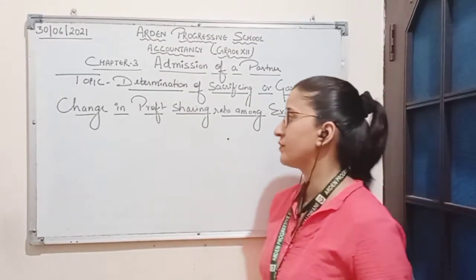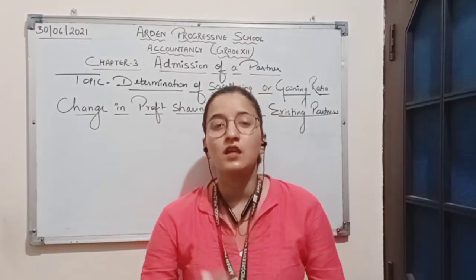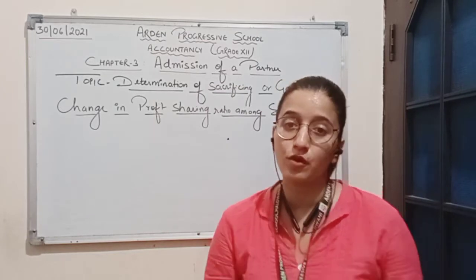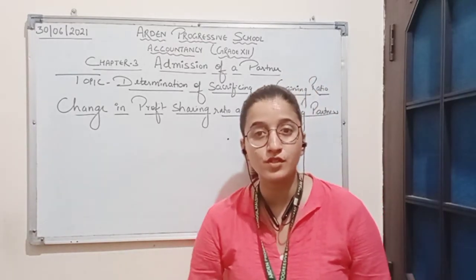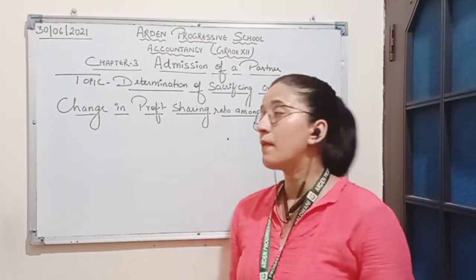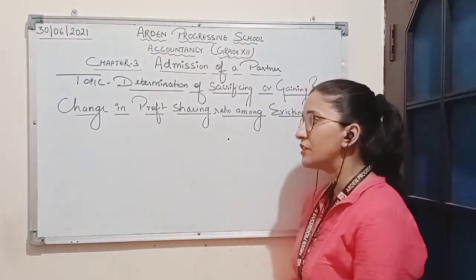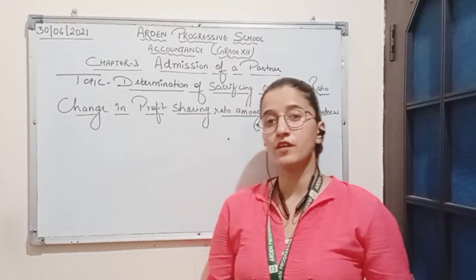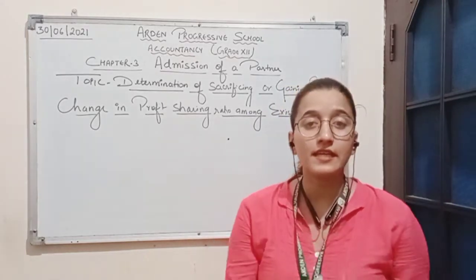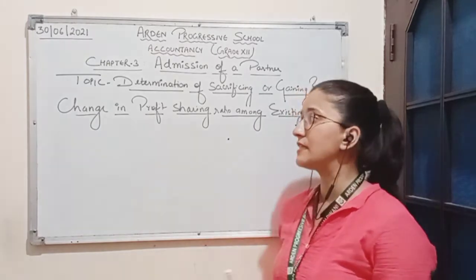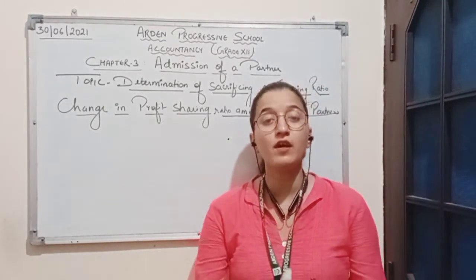The first situation is change in profit sharing ratio among the existing partners. Sometimes partners decide to change their profit sharing ratio in future. This change can be due to change in capital contribution among the partners, or some partners may actively contribute in management or business activities. Due to this change, some partners may get more share in profits and some may get less share in profits, so necessary adjustments are to be made.